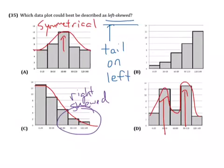But choice B, it has a tail on the left side. That's where it goes down. So, choice B is left skewed.